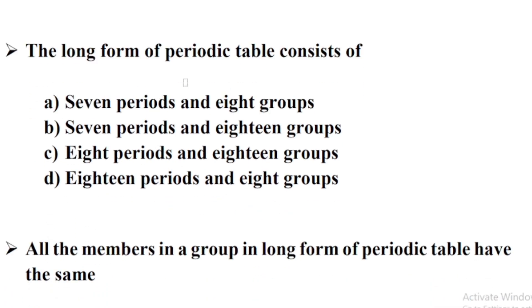The long form of the periodic table consists of — Option B: 7 periods and 18 groups.